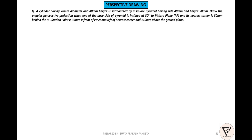Now I am going to discuss this. The station point is 35mm in front of the picture plane. This is the square pyramid and the nearest corner is 30mm behind the PP. This is the picture plane, and the ground plane to horizon plane distance is 110mm.